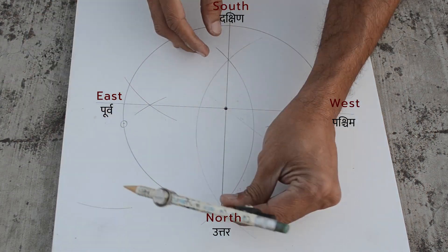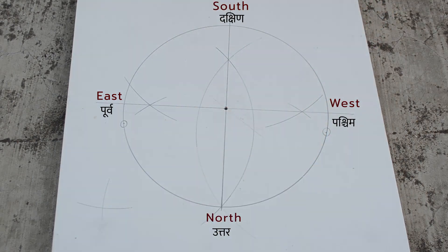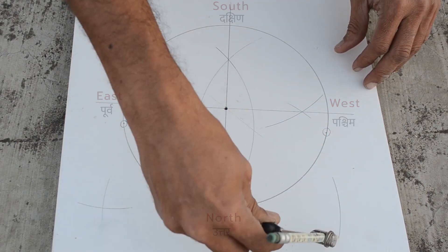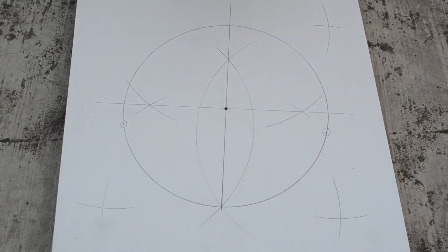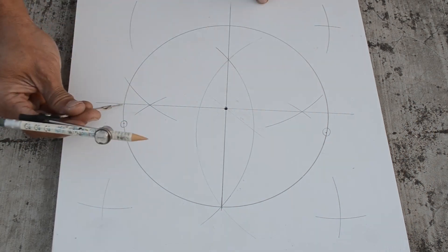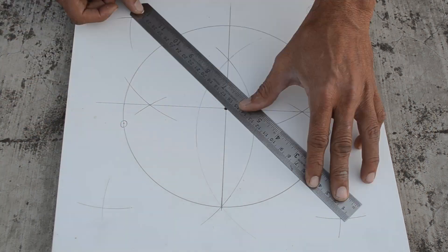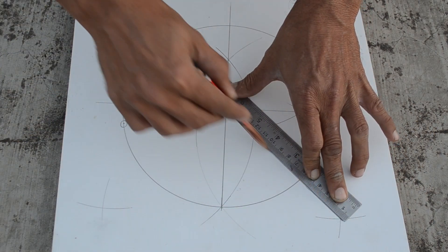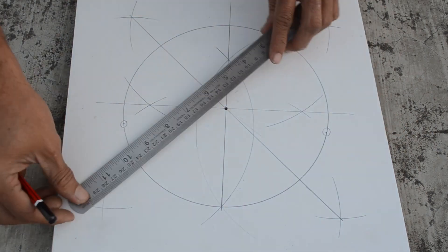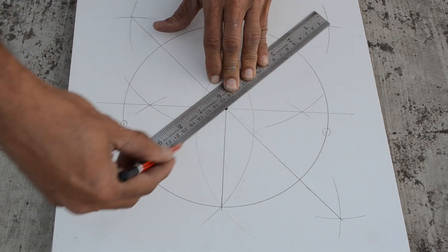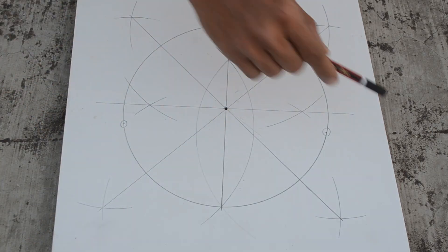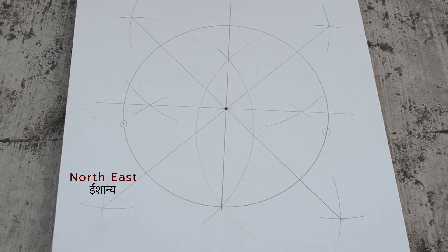With cardinal directions identified, the same steps can be followed again to get the ordinal directions, which are north-east, north-west, south-east and south-west.